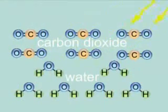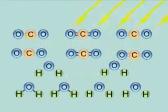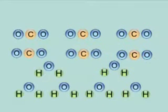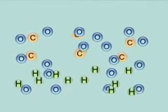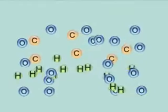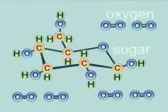Plants use the energy in sunlight to split molecules of carbon dioxide and water apart. The atoms of carbon, oxygen, and hydrogen can then be recombined to form sugar and oxygen molecules.